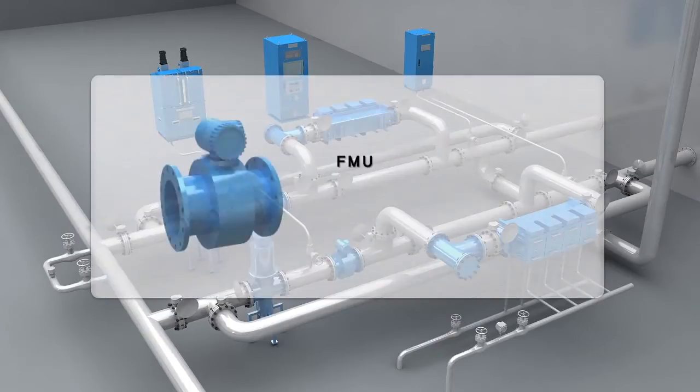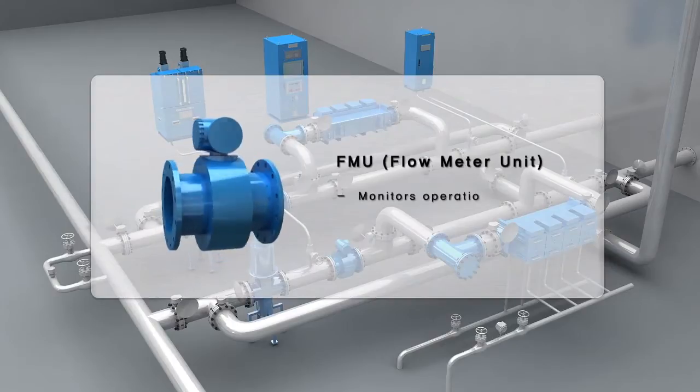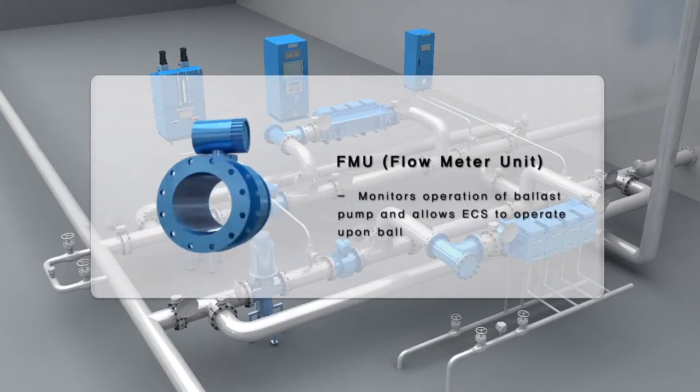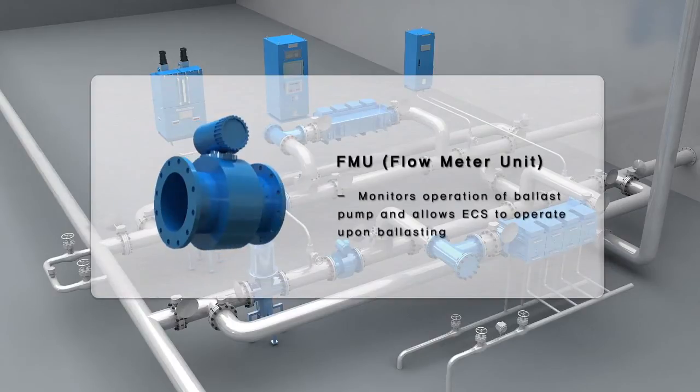FMU is installed between the ballast pump and the inlet of ECU. It monitors operation of the ballast pumps and assists in the proper functioning of ECS during ballasting.